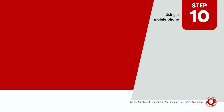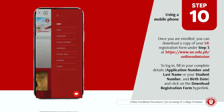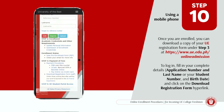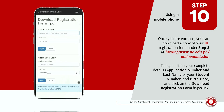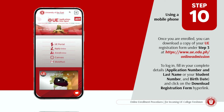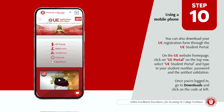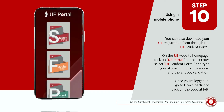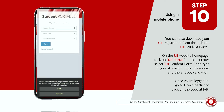Using a mobile phone, once you are enrolled, you can download a copy of your UE registration form under Step 3 at www.ue.edu.ph online admission. To log in, fill in your complete details — application number and last name, or your student number and birth date — and click on the Download Registration Form hyperlink. You can also download your UE registration form through the UE Student Portal: on the UE website homepage, click on UE Portal, then select UE Student Portal and type in your student number, password, and the CAPTCHA validation.